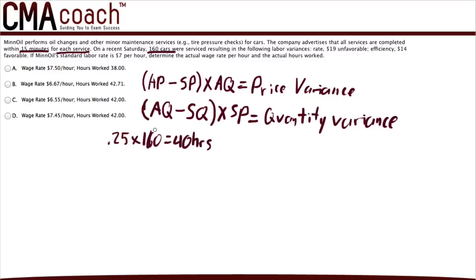Now we need to plug in all the information we know into the formulas. The standard price is given as $7 per hour. The price variance is $19 unfavorable, and the quantity variance is $14 favorable. Whenever we have all values except one, we can set up a simple calculation and solve for the missing variable.